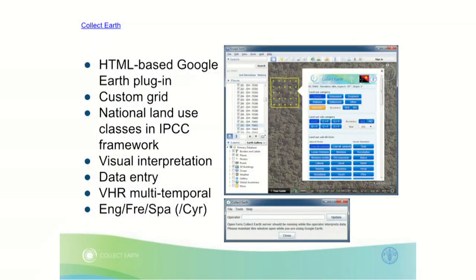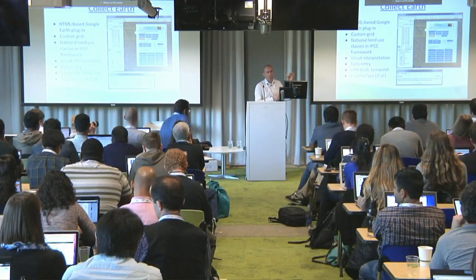Here is an example from one plot. The first two groups are the IPCC categories and subcategories, which are common throughout all the versions we build for any country where we operate. Below that, each country decides what kind of classification they want to use. The interface has been customized for many countries and is available in English, French, Spanish, and we are working on a Cyrillic version.